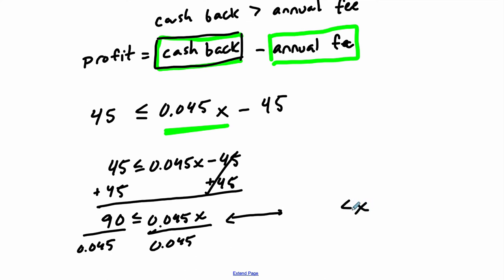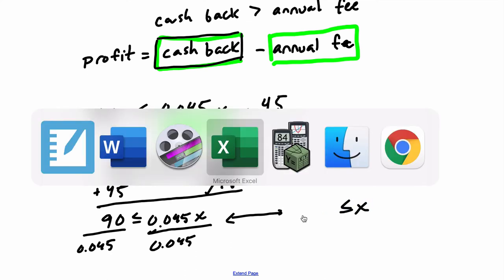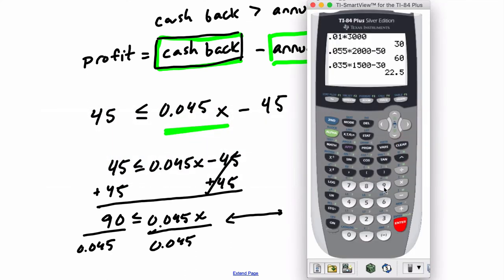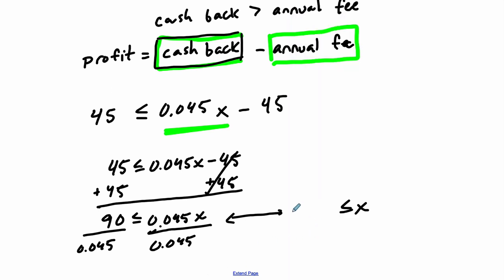So X is going to be, I'm going to keep this on the same side. X has to be the amount we spend. It has to be at least how much? Let's see, 90 divided by 0.045. Look at that amount, $2,000. So we have to spend on this card $2,000 in order to get a profit of $45.